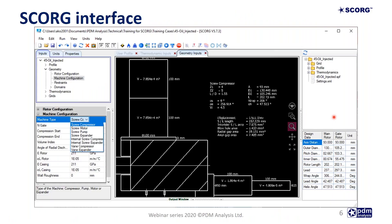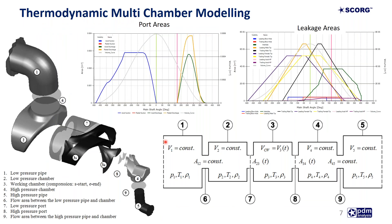The whole process starts by importing the profile into the SCORG interface and setting up the characteristics of the machine — selecting the machine type and configuring other characteristics in terms of its working chambers and the parameters the machine operates on. When set up for lower order modeling using thermodynamic chamber models, SCORG produces important data like volume curves, suction and discharge port areas, and leakage areas, which are then used in thermodynamic models to calculate machine performance.